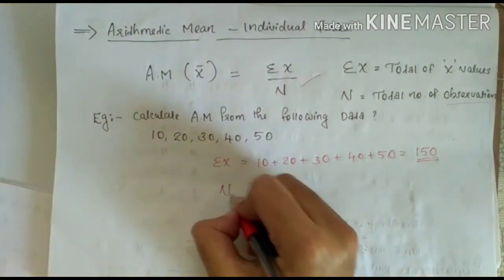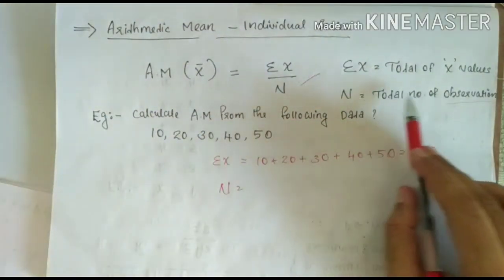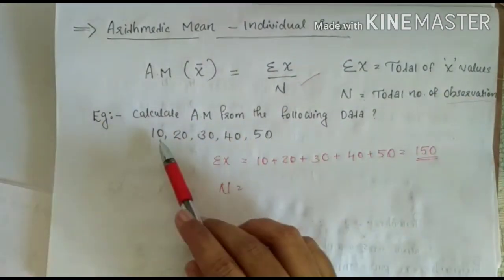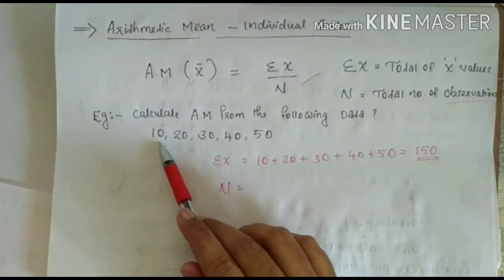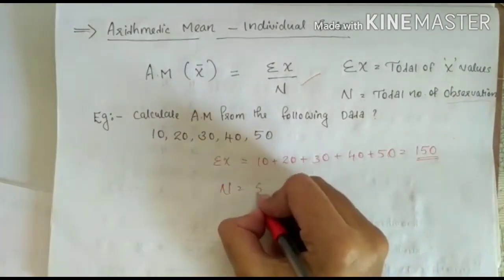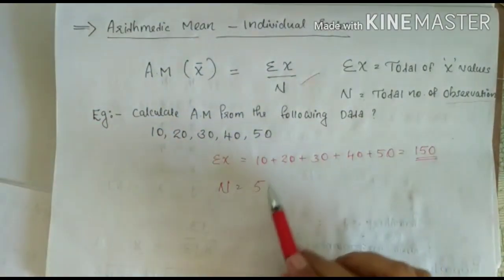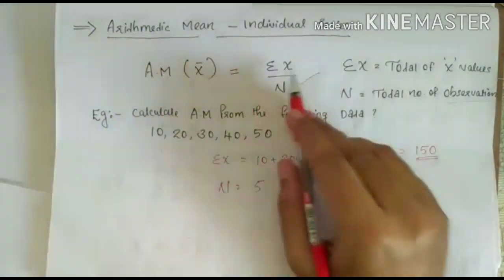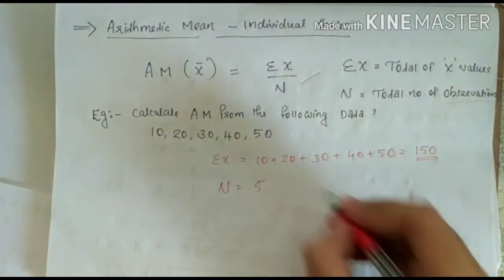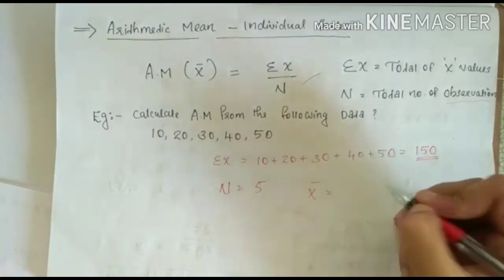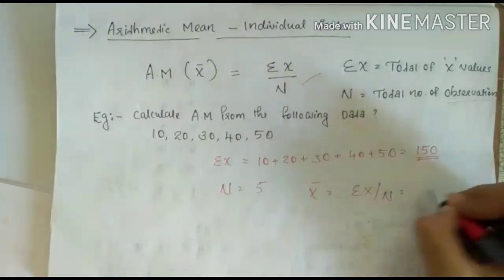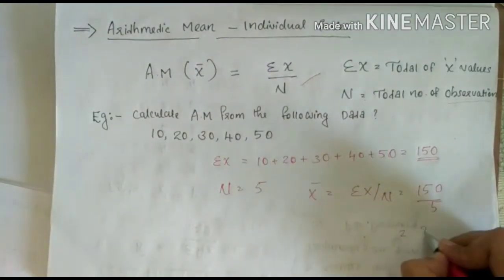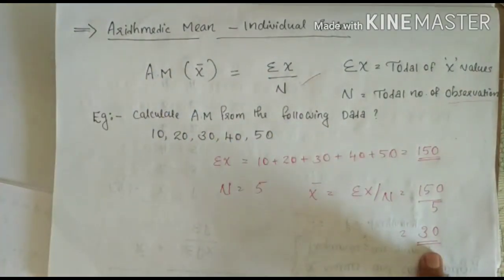Then N — the total number of observations in the series. The total number of observations are 1, 2, 3, 4 and 5, so N = 5. Now apply the equation: X-bar = sigma X divided by N = 150 divided by 5. The answer is 30. The mean value is 30.